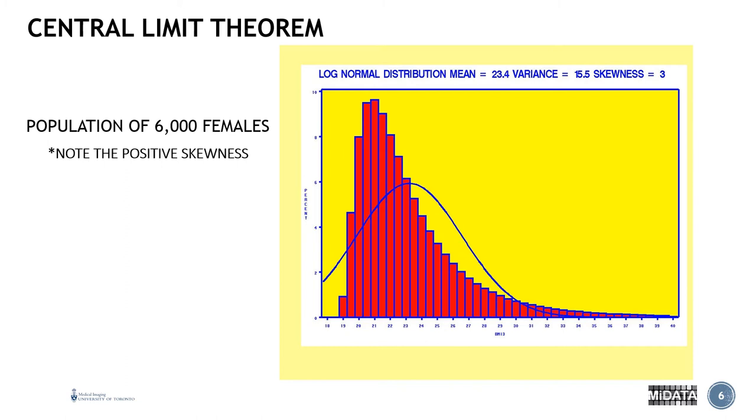Now what we've also done here is we've overlaid the normal curve or the Gaussian curve. And this is to help you see that the center of your distribution should be in the center of your Gaussian curve for it to be normal. And if it's not, it's to the left. And this is indicative of a positive skew.